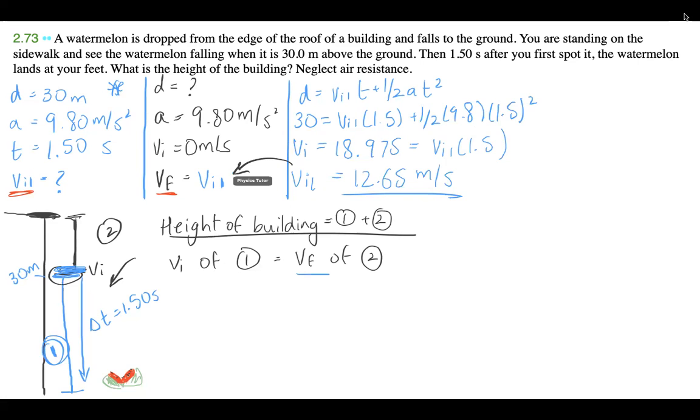So now for this portion over here, we have our VF, we have our VI, and we have our A. And now we're just looking for a D. So we can use another kinematic equation that has all these variables in it.